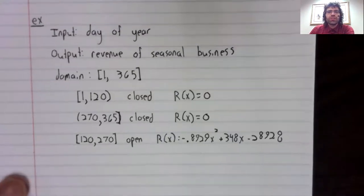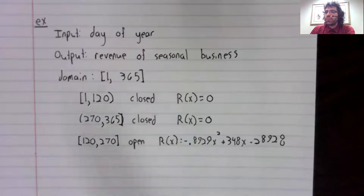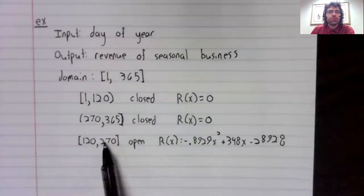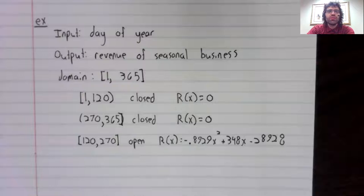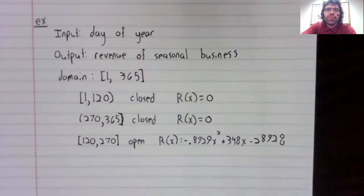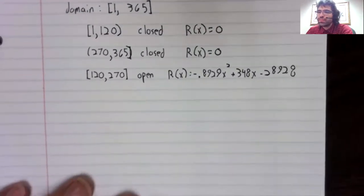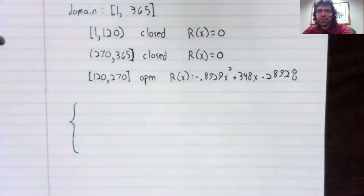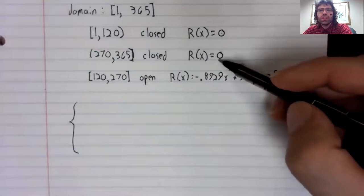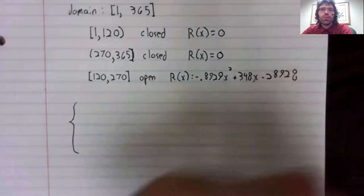So this is a single function, but you see we've broken the domain into three pieces. And we have three different equations depending on which piece we're looking at. And the way a piecewise function like this would ordinarily be written, you'd have curly brackets, and then you'd write down each of these three equations.